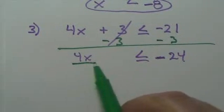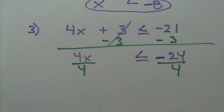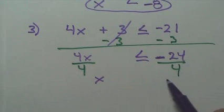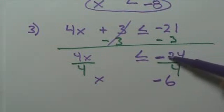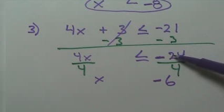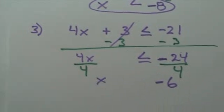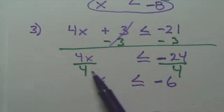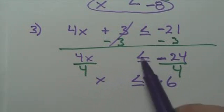Next, I'll divide by four to get rid of this four. That leaves me with x. Twenty-four divided by four is six, and there's one negative. Wait — I'm dividing by a negative, but I'm not doing it to both sides. Do I reverse the arrow? No. I divided both sides by four — I did not divide by negative four. Therefore, the arrow stays the same.